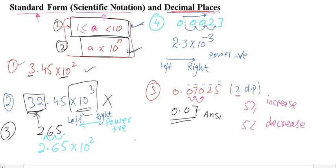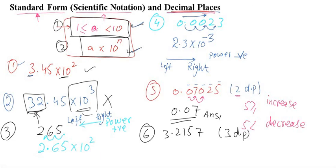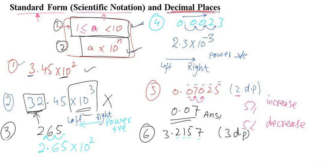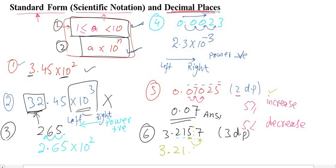Another example: given 3.2157, write the answer in three decimal places. There are four decimal places in this number. The third decimal place is 5, and we check the next digit — which is 7. Since 7 is 5 or more, we round up, increasing the third decimal digit by 1. So 5 becomes 6, and the answer is 3.216, which is three decimal places.